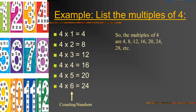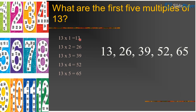In this way you should write in the copy book children. One more example: what are the first 5 multiples of 13? So 13 times 1 is 13, 13 times 2 is 26, 13 times 3 is 39, 13 times 4 is 52, 13 times 5 is 65. So the first 5 multiples of 13 are 13, 26, 39, 52 and 65.